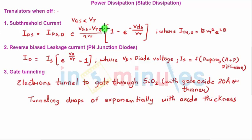Here is the sub-threshold current formula we have already seen. Reverse-bias leakage current arises because in the cross-sectional view of a CMOS circuit, between the diffusion and the substrate or the diffusion and the well, reverse-bias diodes are formed. These contribute a reverse-bias current ID, given by the formula we have seen in detail. The last source is gate tunneling: though SiO2 is a very good insulator, electrons can tunnel through SiO2 if gate oxide thickness is 20 Angstroms or less, since tunneling drops off exponentially with oxide thickness.